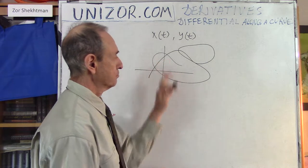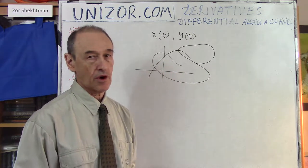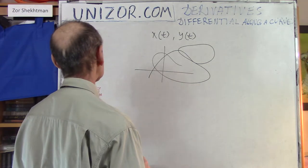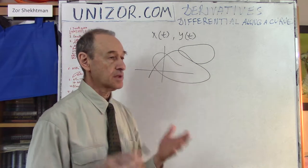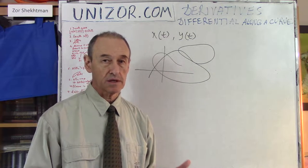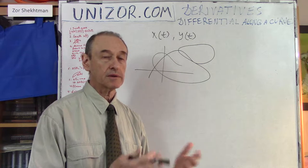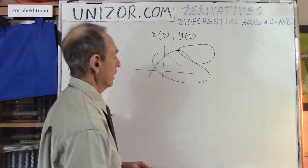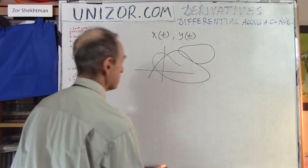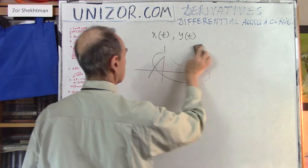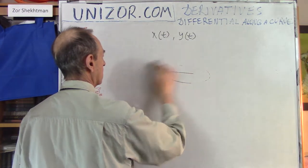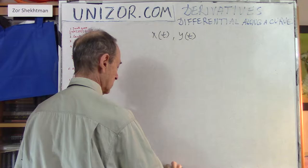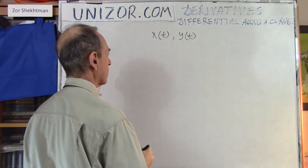So we will talk about a parametric curve and the differential along the curve. Basically, the purpose of this is to talk about the lengths of the curve. Let me just make the picture much simpler, and let's talk about the length of the curve.